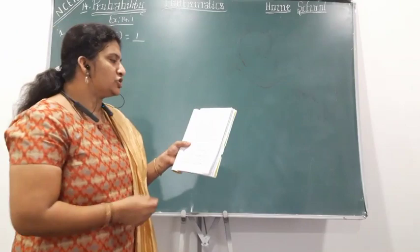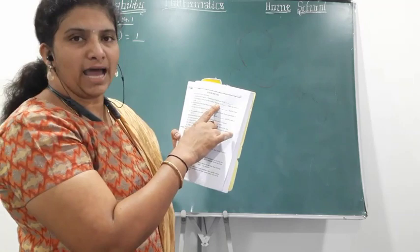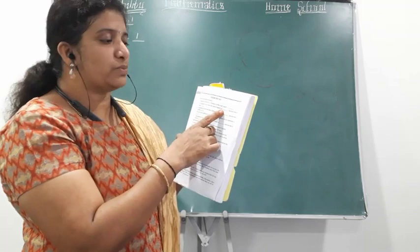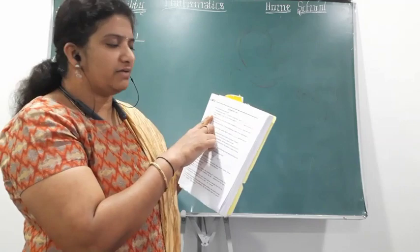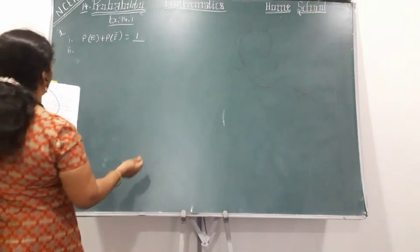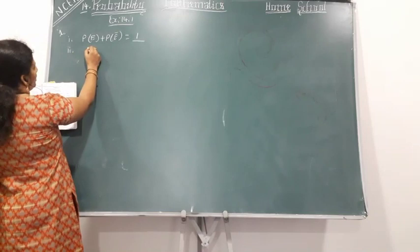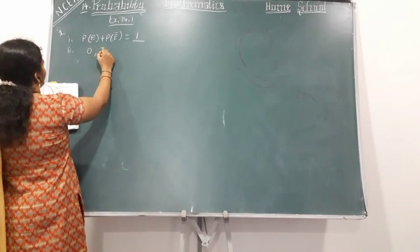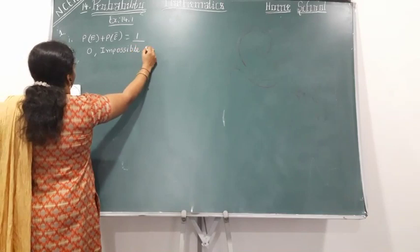Let's go with the second question. The probability of an event that cannot happen — its value will be zero. Such an event is called an impossible event. The probability of an event that cannot happen is zero. Such an event is called an impossible event.